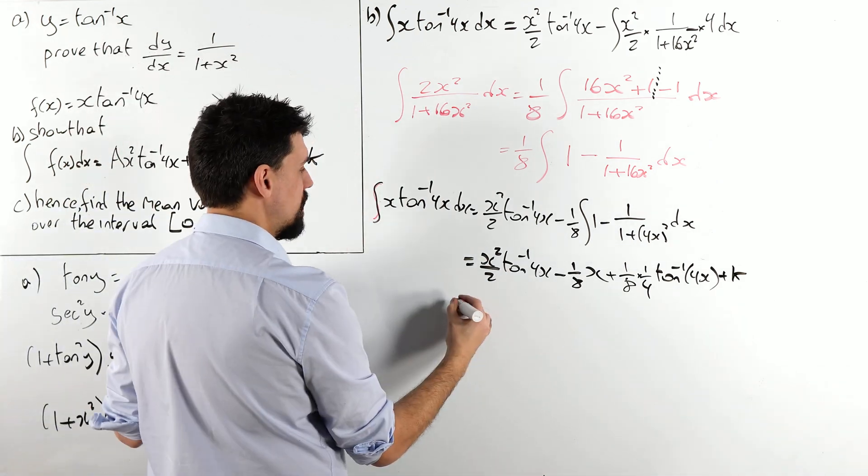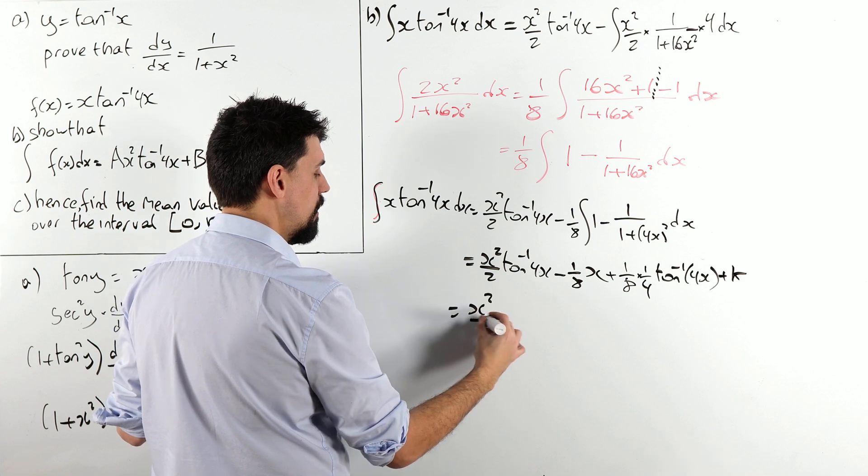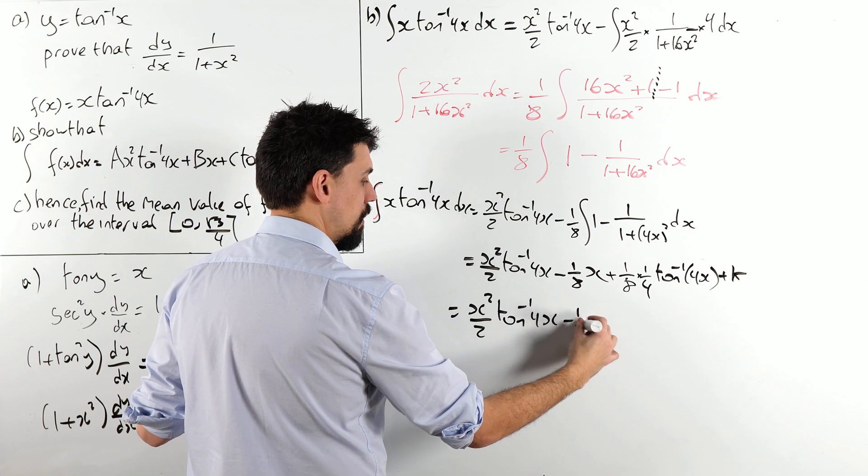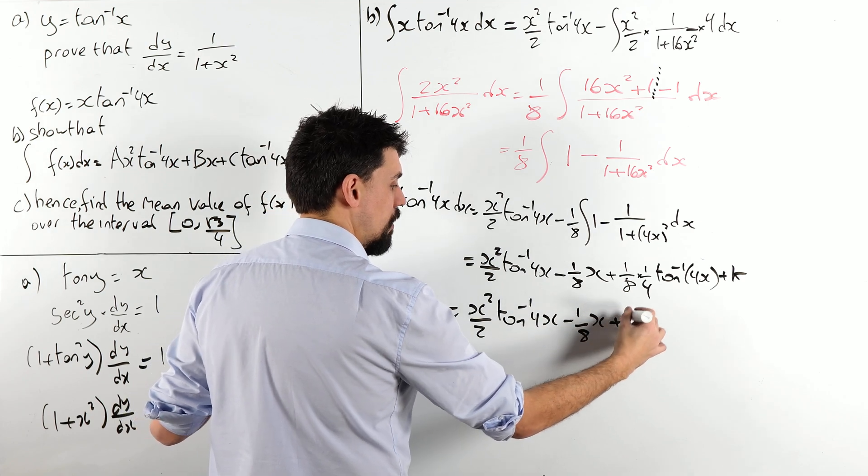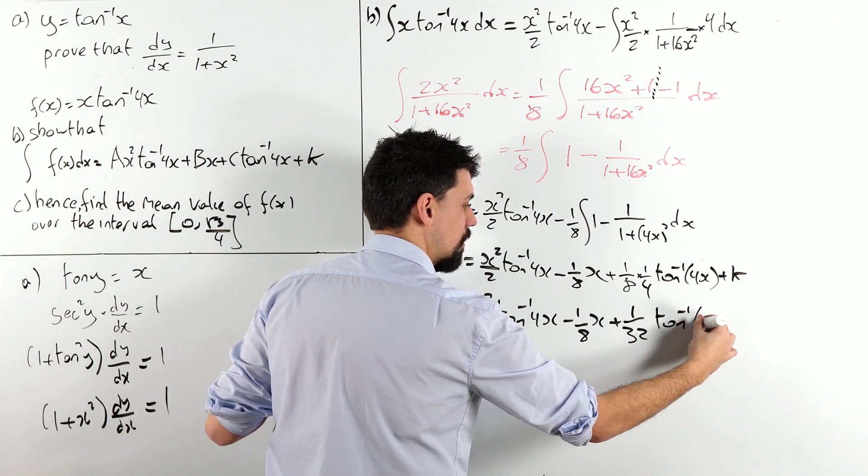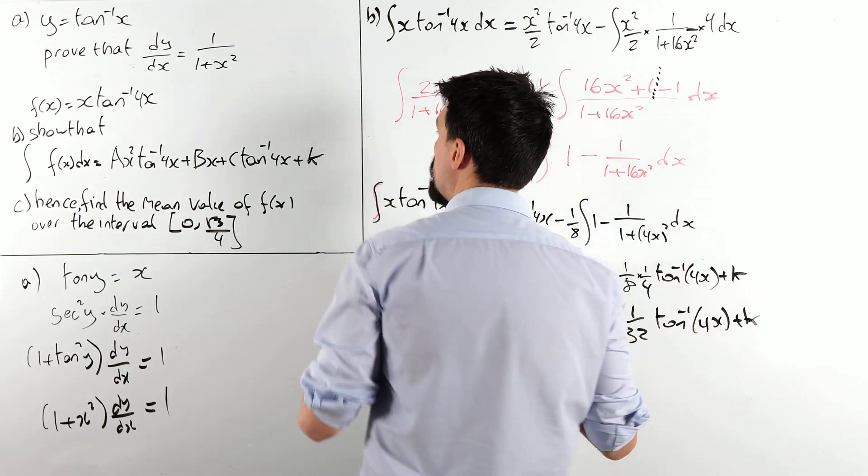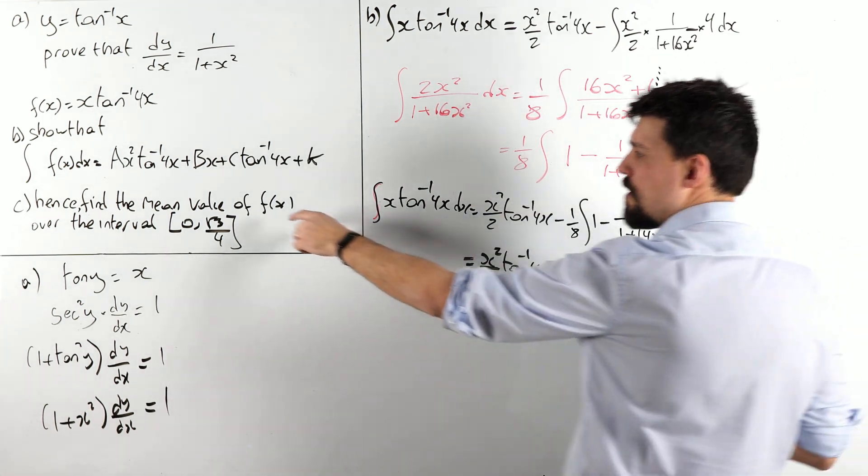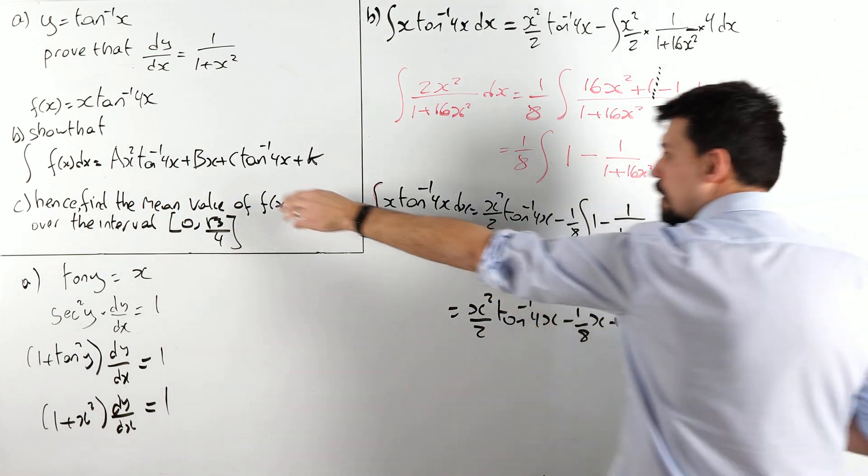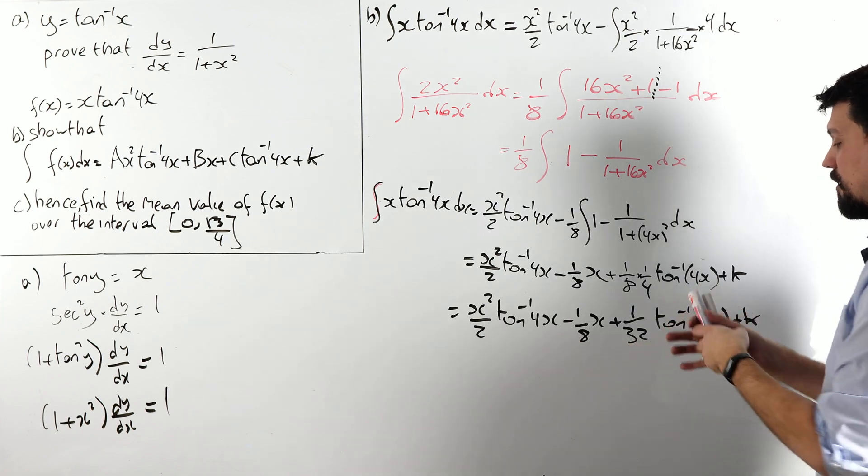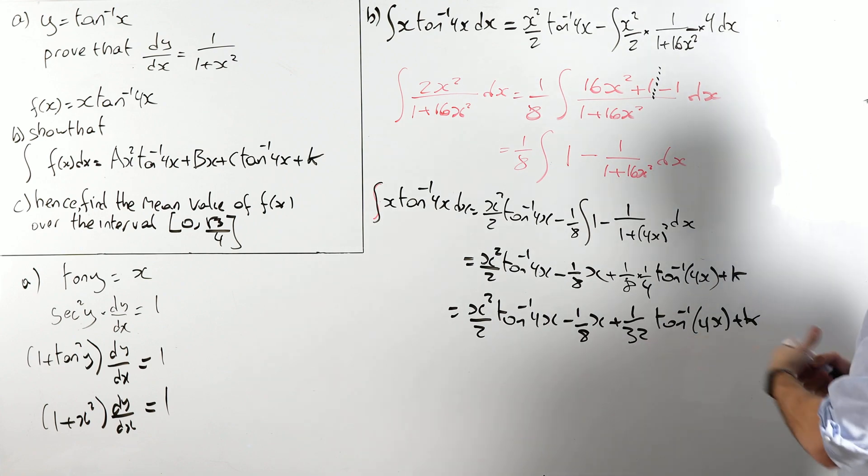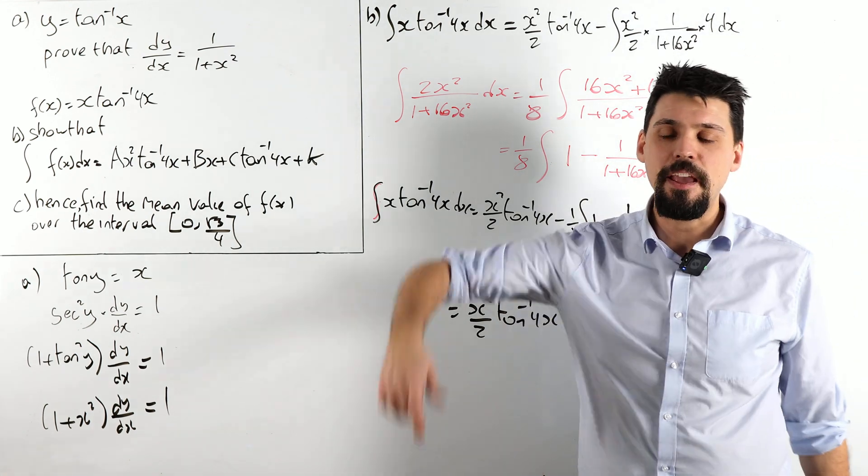Overall, this will give us our identity. We will get the correct form. What did the question want us to do? Ax squared, I've got a is a half, bx, I've got b is minus 1 eighth, and then c inverse tan of 4x, c is 1 over 32, we've got a plus k, boom.